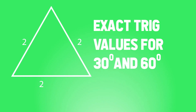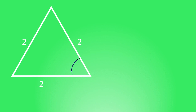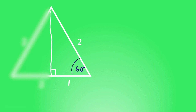To find exact trig values for 30 and 60 degrees, we use an equilateral triangle, where all angles are 60 degrees. We split this triangle in two right down the middle, giving two triangles each with a 90-degree angle. The base has a length of two, so each half has a base of one. Focusing on the right-hand triangle: we have a 60-degree angle, a 90-degree angle, so the remaining angle must be 30 degrees.